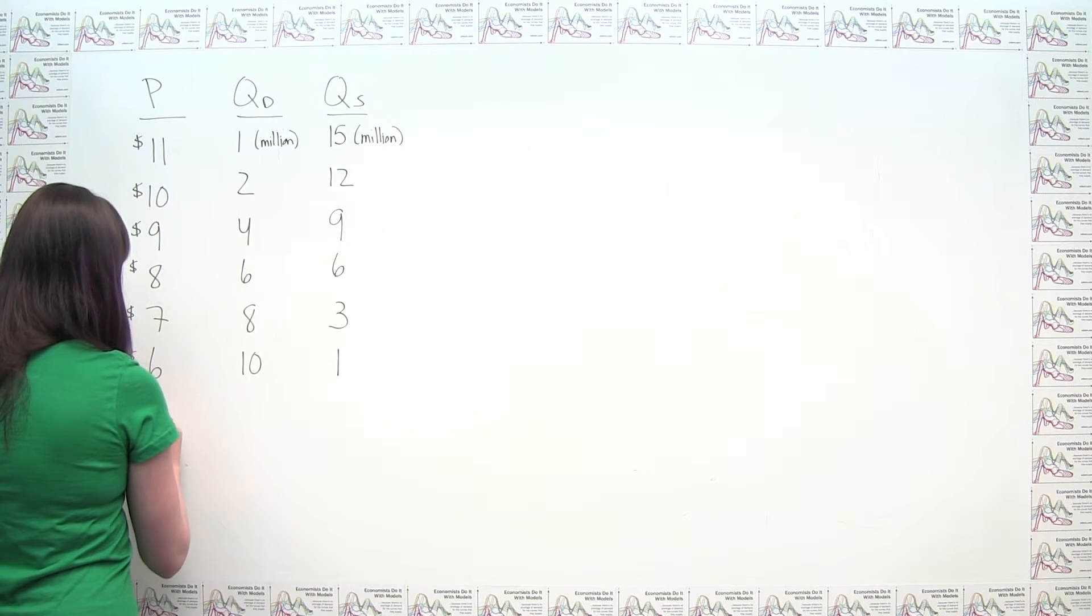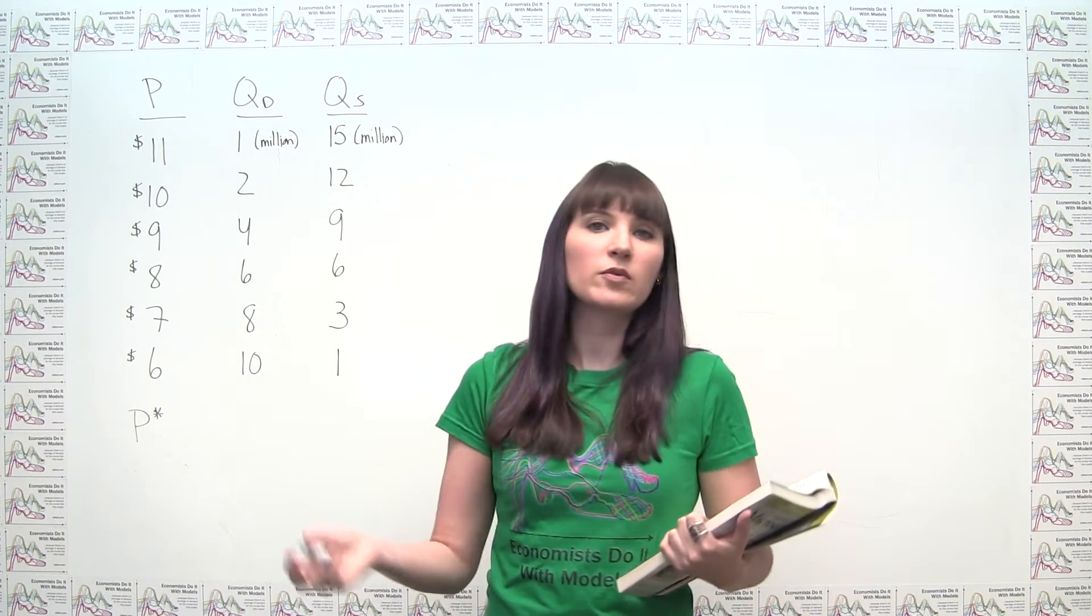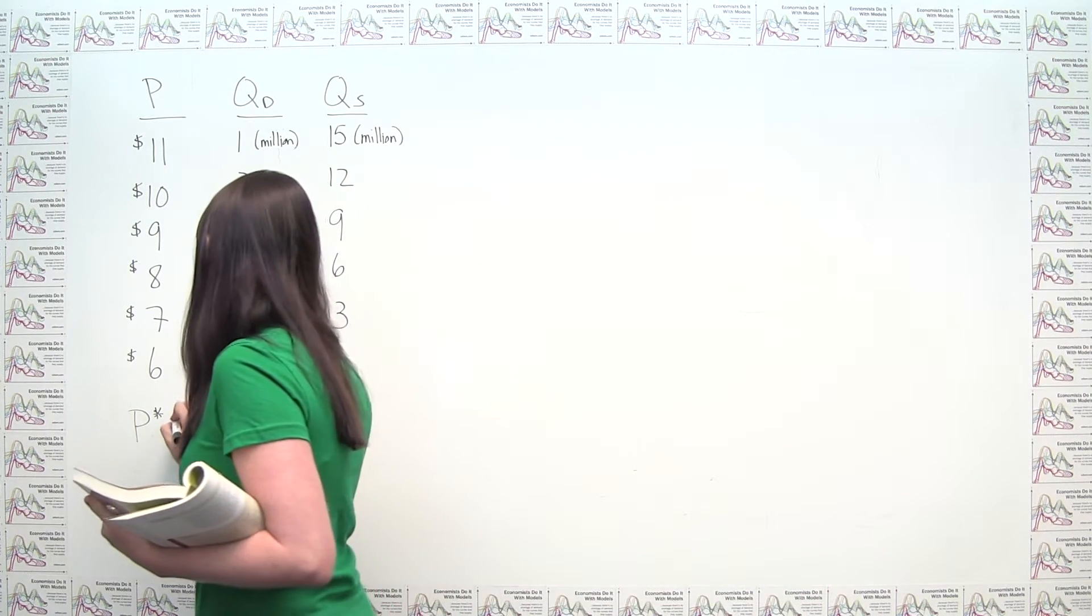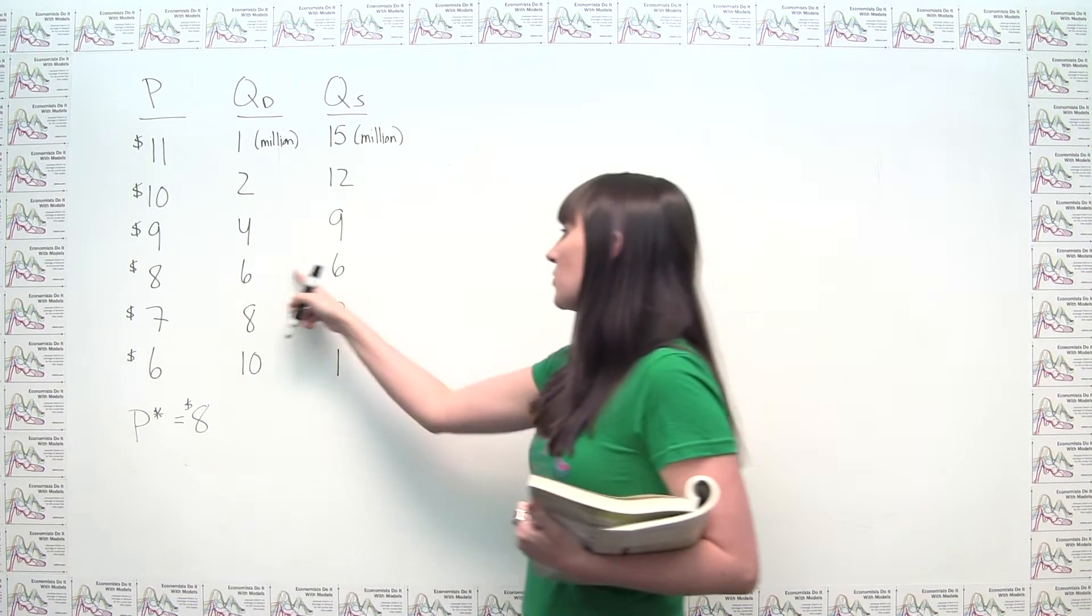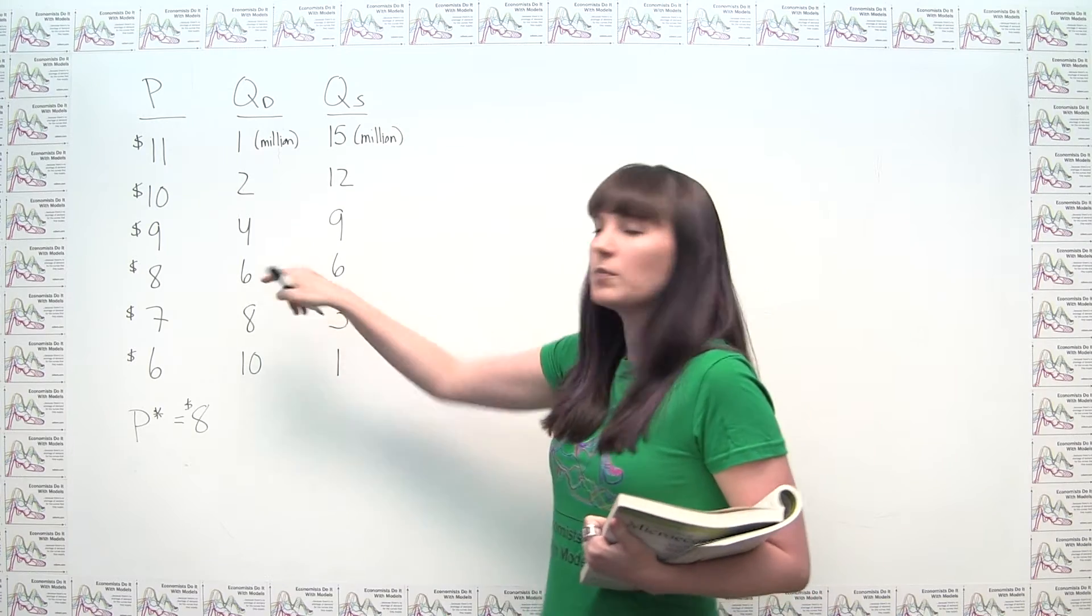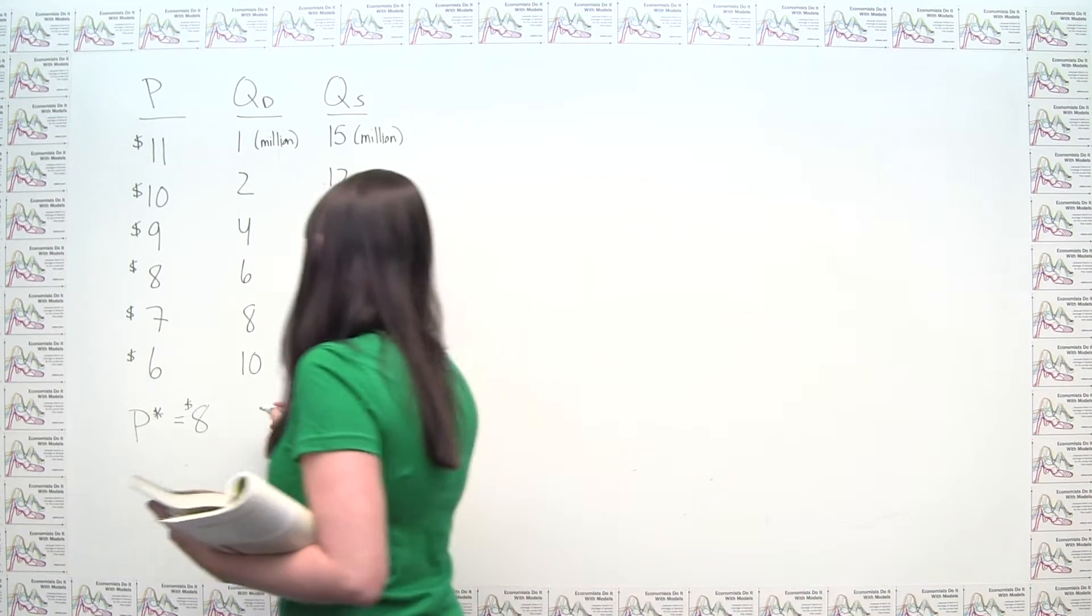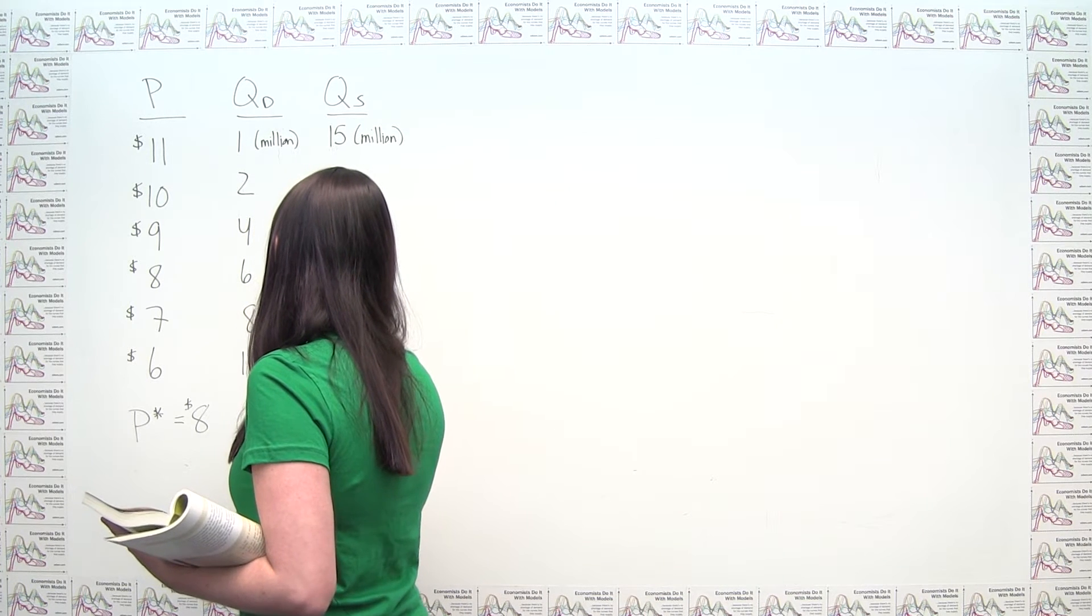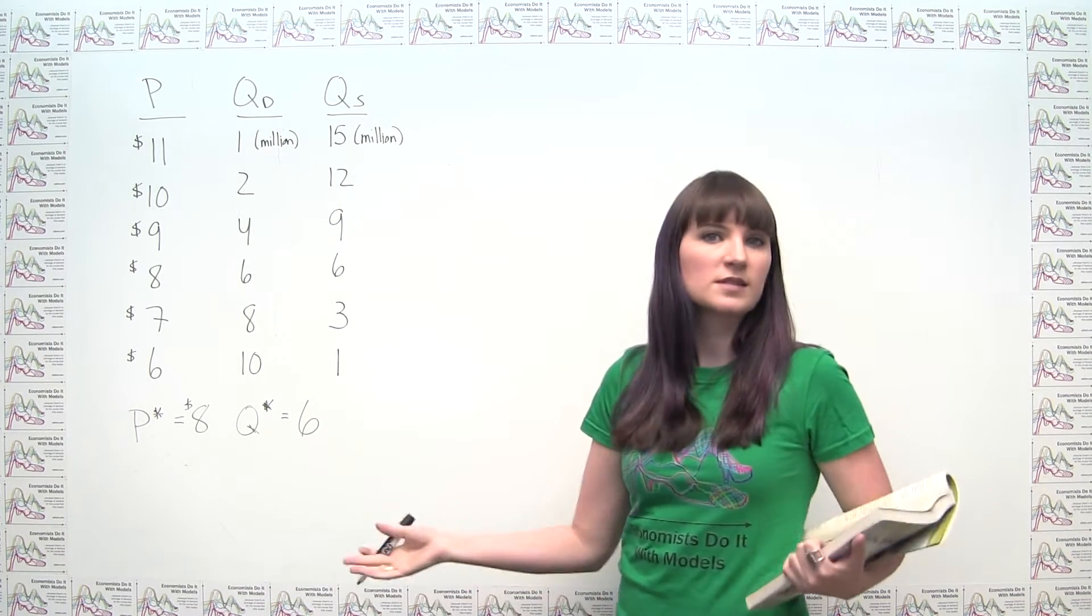So we could just write that down to keep track of it. We could say that p star, u stars for equilibrium prices and quantities. So let's say my equilibrium price, p star, would be $8, and my equilibrium quantity, it doesn't matter which one of these I pull, because they're by definition the same thing, we'll call that q star, again for equilibrium, and our q star is just six, of course, six million.